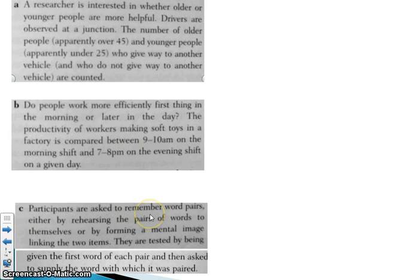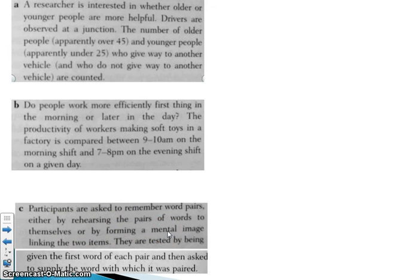Participants are asked to remember word pairs either by rehearsing the pair of words to themselves or by forming a mental image linking the two items together. They're tested by being given the first word of each pair and asked to supply the word with which it was paired. The IV would be whether they are rehearsing the pairs of words to themselves or forming mental images — those are the two conditions. The DV, the result, is how well they did on that memory test.